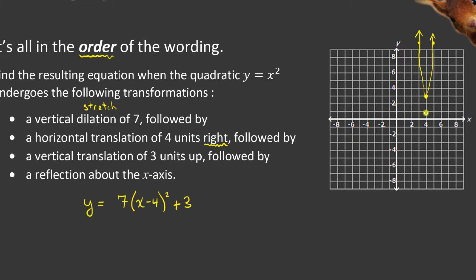And so my vertex is currently at 4, 3. Then it says, the last instruction says followed by a reflection about the x-axis.